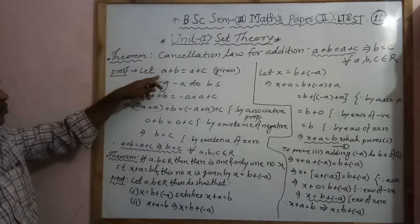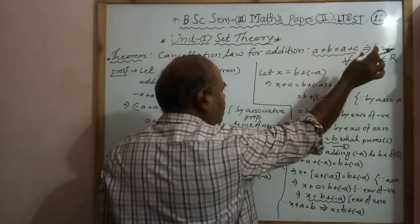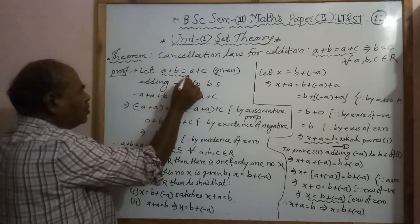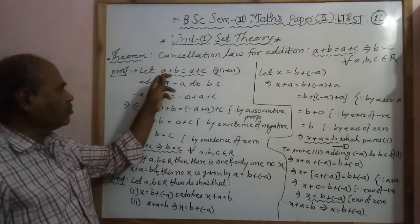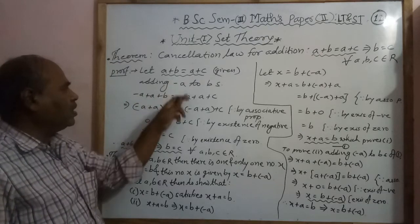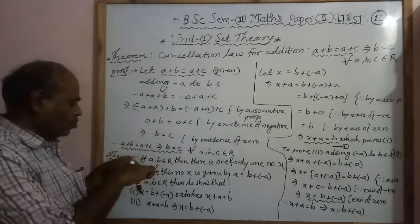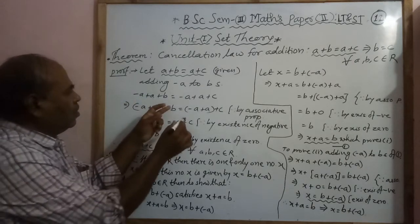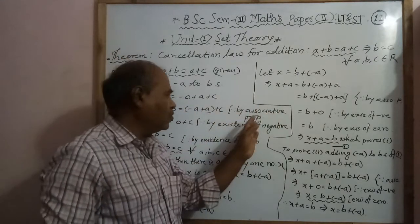Proof of the theorem: let the left-hand side be A plus B equal to A plus C. Then we have to prove B equal to C. Consider the left-hand side A plus B equal to A plus C, which is given. Now, adding minus A to both sides of this equation. Therefore, minus A plus A plus B equals minus A plus A plus C. Then by associative property, we associate minus A and A in one bracket.